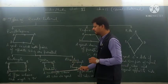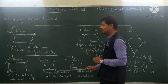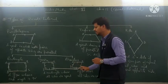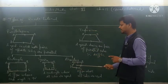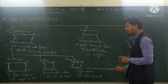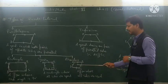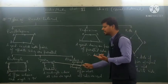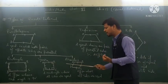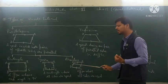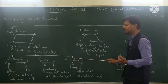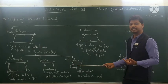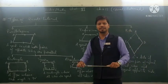A square is a rectangle whose all sides are equal, and all angles are 90 degrees. After that, a rhombus is a parallelogram whose all sides are equal. Now notice the difference between rhombus and square: both have all sides equal, but the important difference is that in a square every angle is 90 degrees, whereas in a rhombus every angle is not 90 degrees. Hope you understand this video. Thank you.